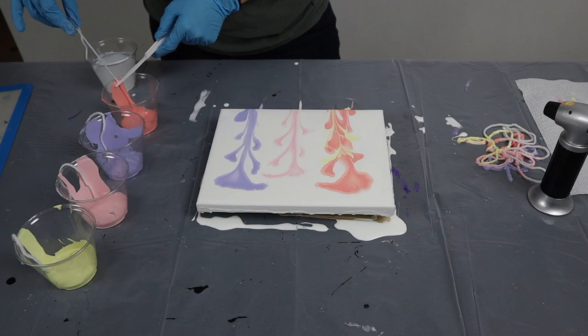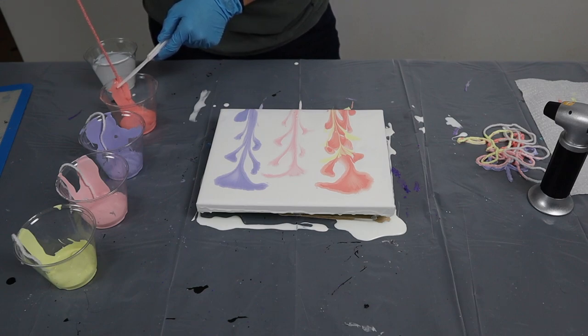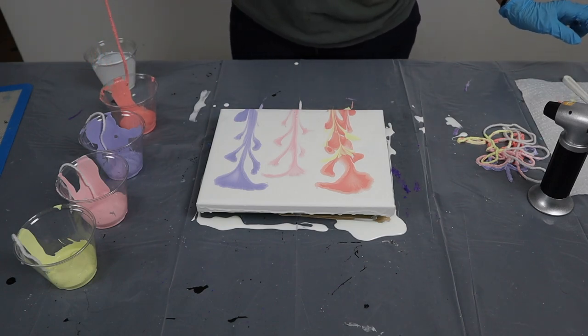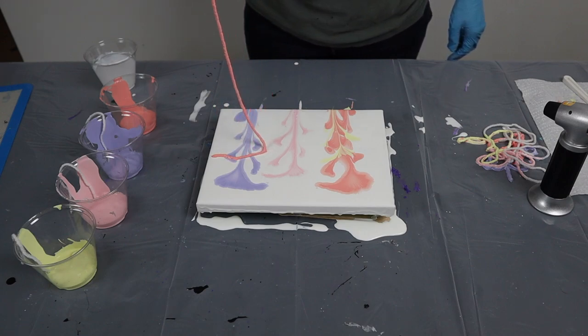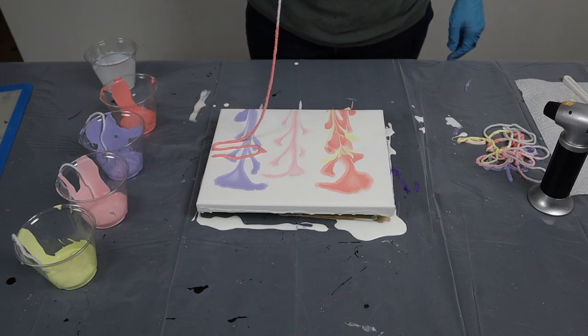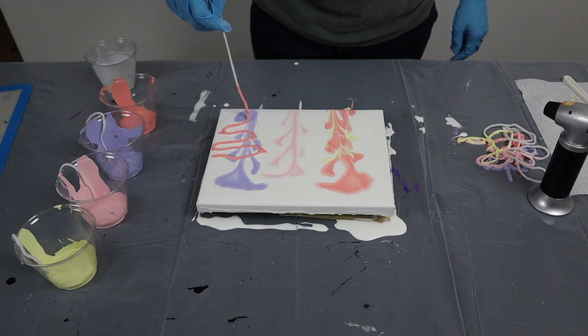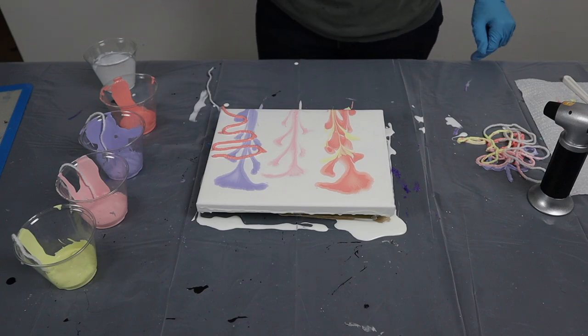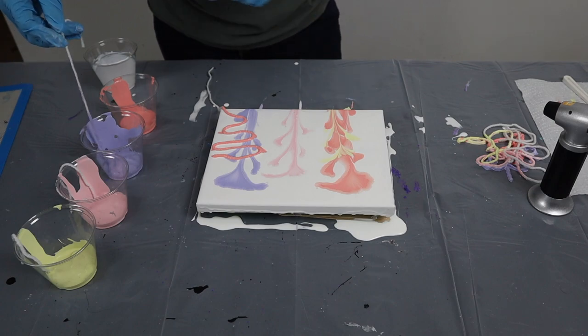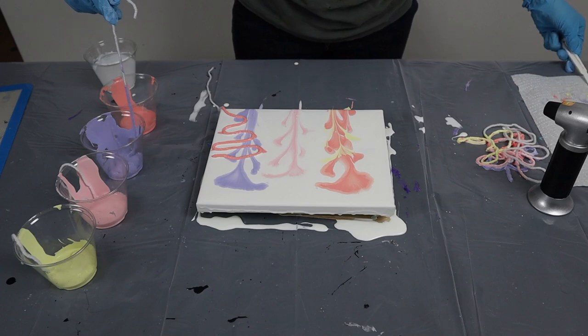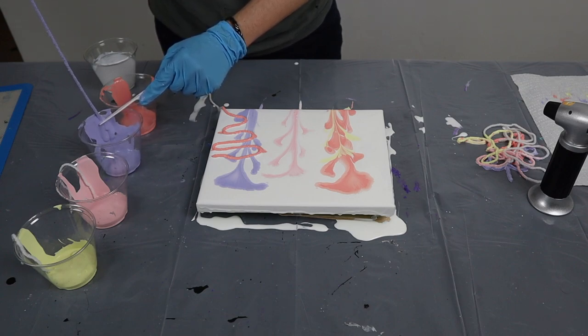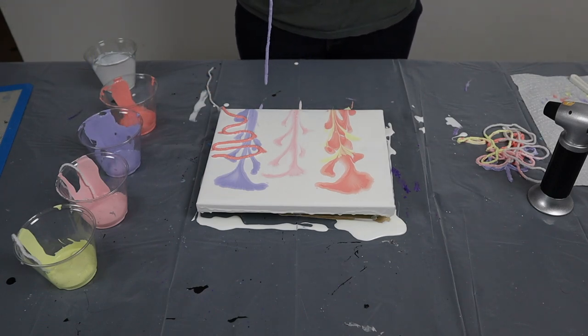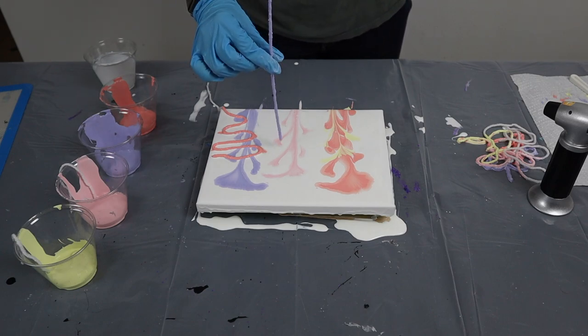Now how do I want to layer this. I'll pull it kind of off of the corner that could be really fun. And then I think I'm going to do the purple one.